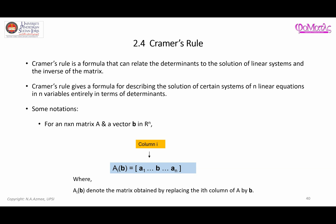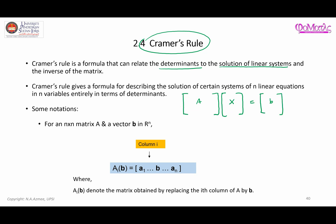Hi, assalamualaikum warahmatullahi wabarakatuh. In this video I'm going to talk about how you can use Cramer's Rule, which relates the determinants of a matrix in order to find the solution of linear systems. Recall that whenever you have a set of linear equations, you can always write it in terms of matrix A, which contains all the coefficients of the unknown variables, next to the matrix of unknown variables and a column matrix containing the constants on the right-hand side.